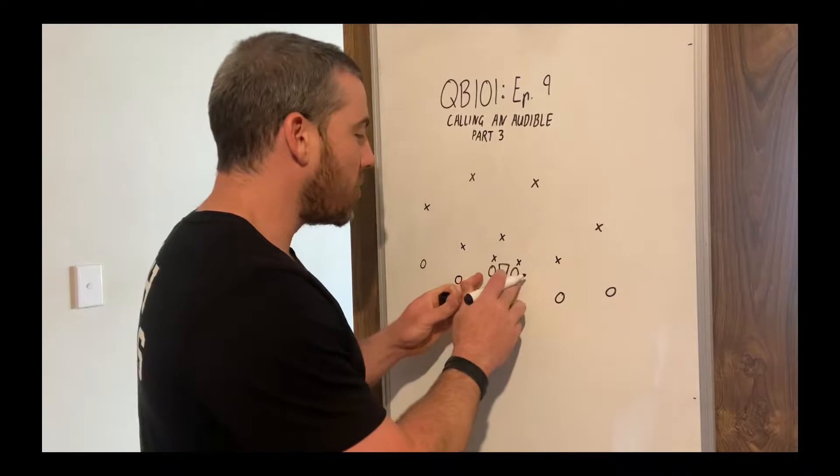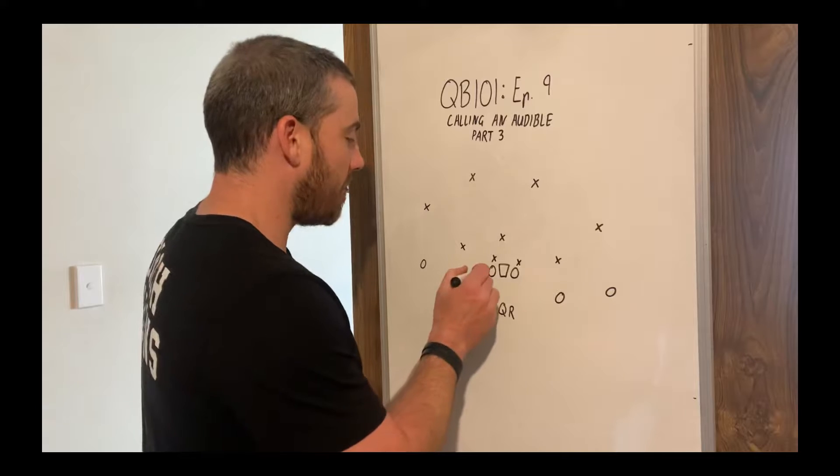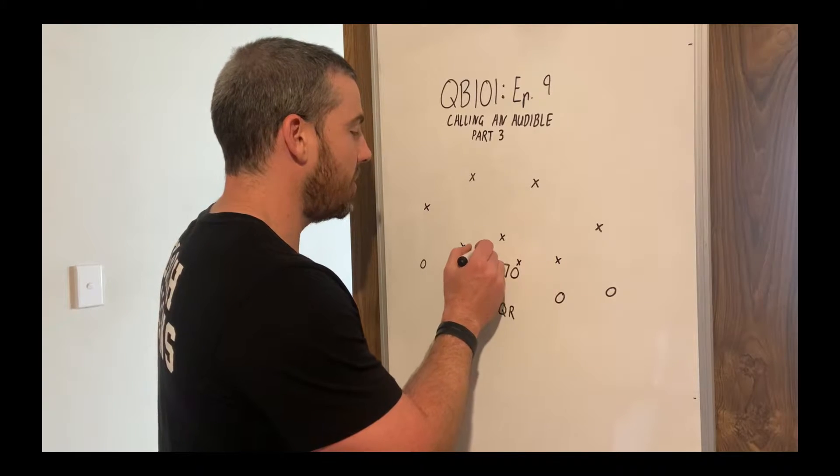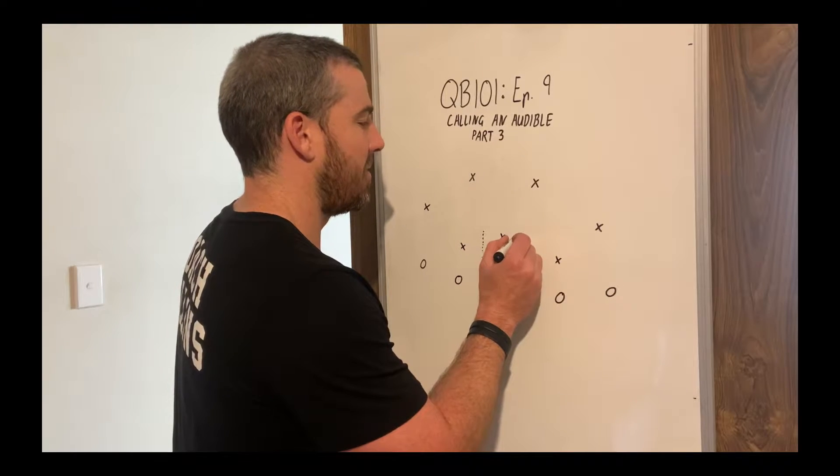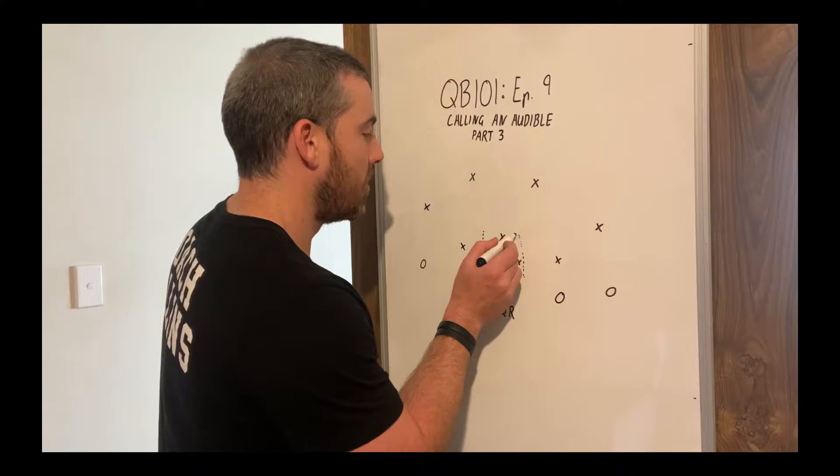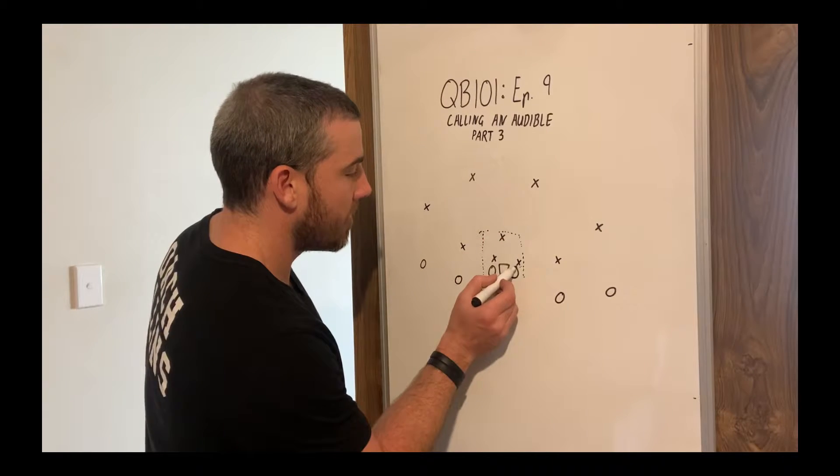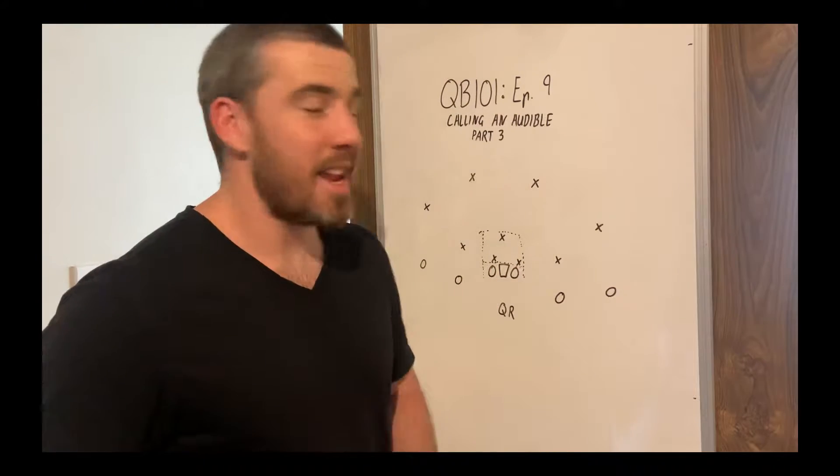Now, when it comes to 9-on-9, where the tackle box is, can be a bit confusing. I give one yard outside this guard, becomes the tackle box. I think it's to about eight yards deep. So this is the tackle box. How many people are in here defending the run? Right now, there is three.